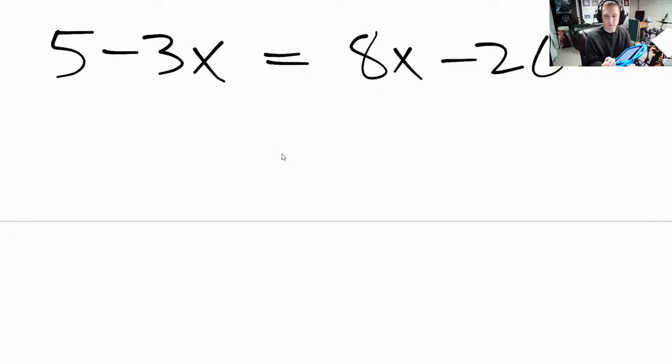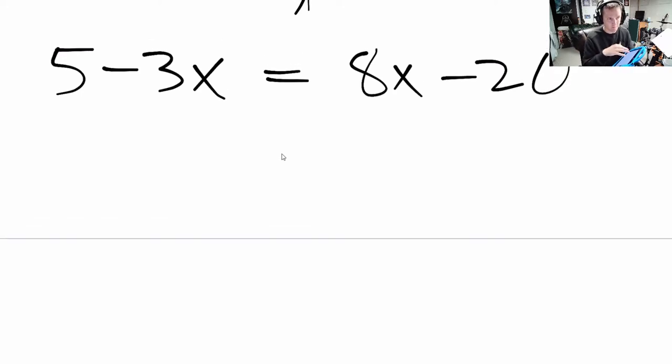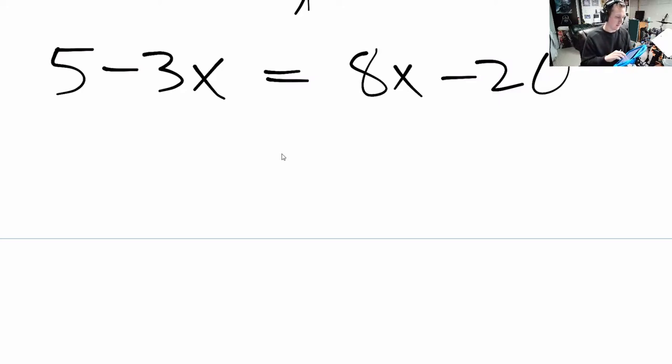But if you're given any equality, I'll just flip the book here to the next page. They say, here's a good example: 5 minus 3x is equal to 8x minus 20. Now you could solve this algebraically, you could add things to both sides, subtract things, divide things, and solve.